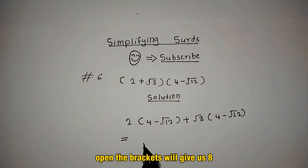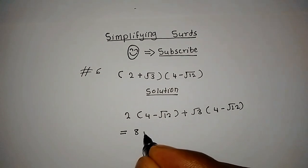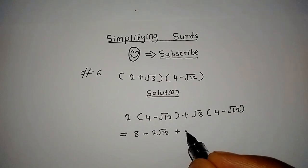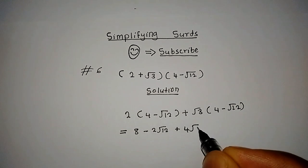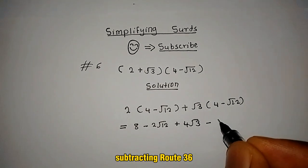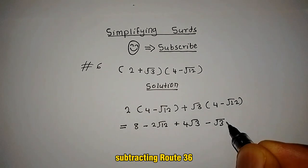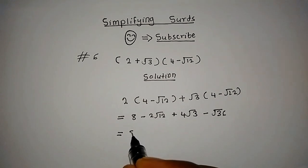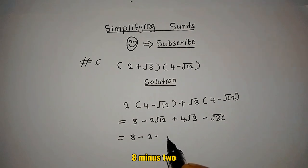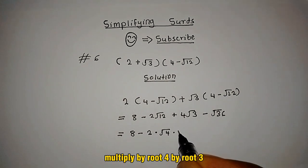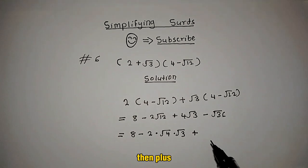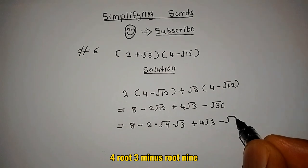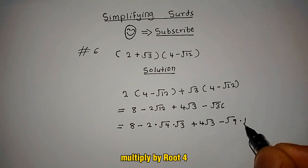Opening the brackets gives us 8 minus 2 root 12, plus 4 root 3, minus root 36. We simplify: 8 minus 2 multiplied by root 4 times root 3, plus 4 root 3, minus root 9 multiplied by root 4.